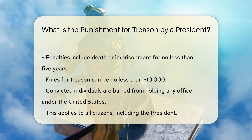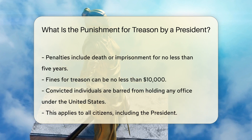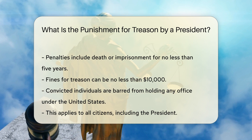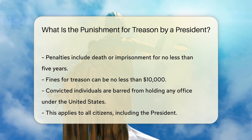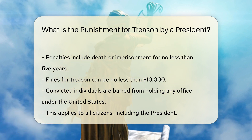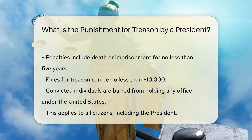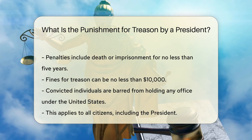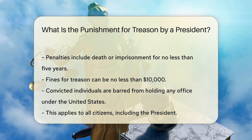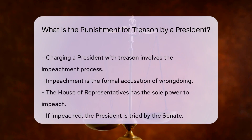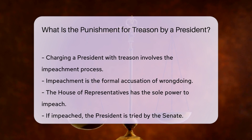The punishment for treason is severe. The U.S. Code, Title 18, Section 2381, specifies the penalties. A person convicted of treason can face death or imprisonment for no less than five years. They can also be fined under this title, but not less than $10,000. Additionally, anyone convicted of treason is barred from holding any office under the United States. This applies to all citizens, including the president.